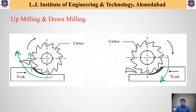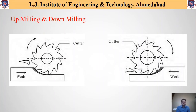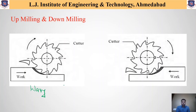In up milling, the process tends to lift the workpiece, so there is a chance of vibration, which results in a wavy surface at the end of the machining process. Whereas in down milling, the surface finish obtained is far better than in up milling. So from a surface finish point of view, down milling provides better surface finish than the up milling process.